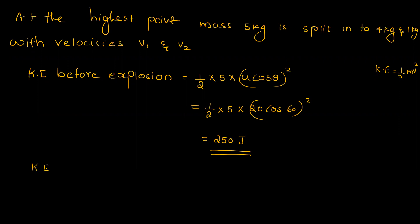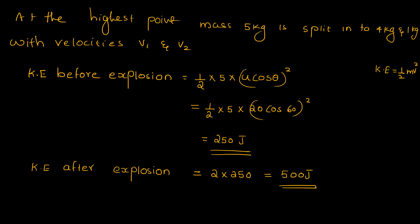The kinetic energy after the explosion is 2 into 250, which equals 500 joules. After the explosion, the mass splits, and the kinetic energy equation becomes: one-half into M1 V1 squared plus one-half into M2 V2 squared equals 500 joules.